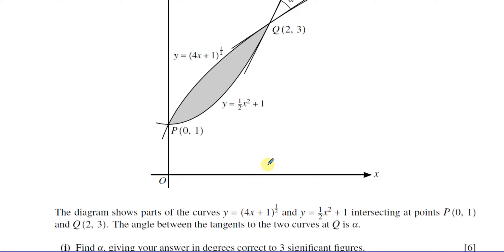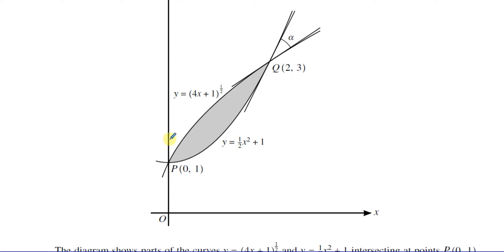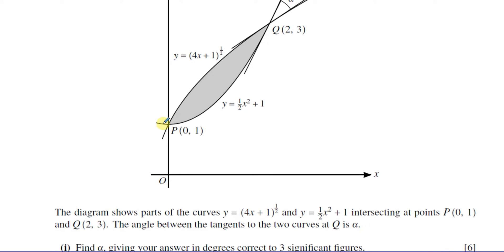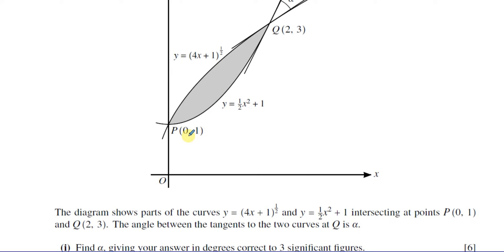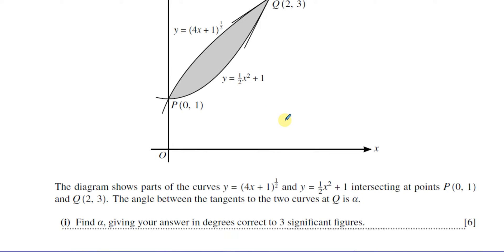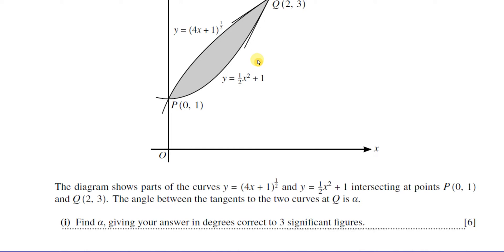The diagram shows parts of the curves y = (4x + 1)^(1/2), which is this curve over here, and y = (1/2)x² + 1, which is this curve over there, intersecting at points P and Q: (0, 1) and (2, 3). The angle between the tangents to the two curves at Q is alpha. Find alpha, giving your answer in degrees correct to three significant figures.